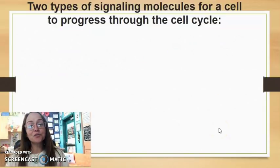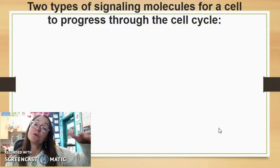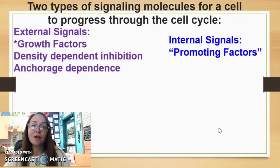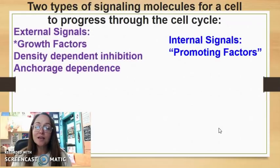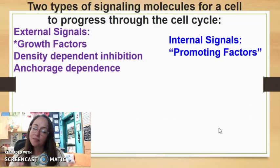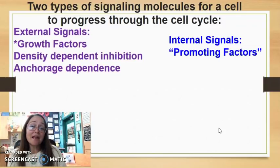What we're going to see here are the different ways that the cell cycle can be regulated between external signals as well as internal signals to help the cell promote through different phases of the cell cycle. When we look at the two types of signals, you have the external signals that would include growth factors. It also has density-dependent inhibition and anchorage dependence. When we look at internal signals, these are going to include our promoting factors, which are made out of cyclins and cyclin-dependent kinases.